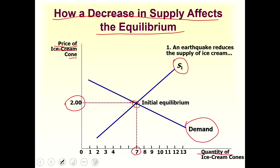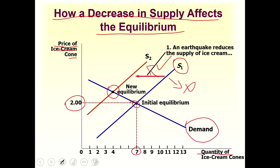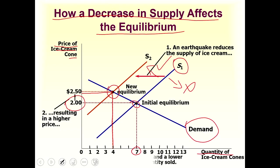Assume that an earthquake reduces the supply of raw materials needed to produce ice cream. When supply decreases, the supply curve shifts towards the left — not the right, but towards the left. Whenever supply decreases it shifts left; whenever it increases it shifts right. In this case we get a new equilibrium with a new price level of 2.5 and a new quantity of 4.